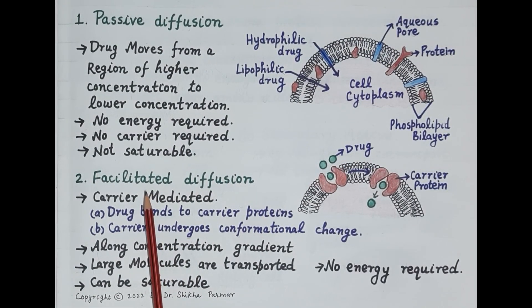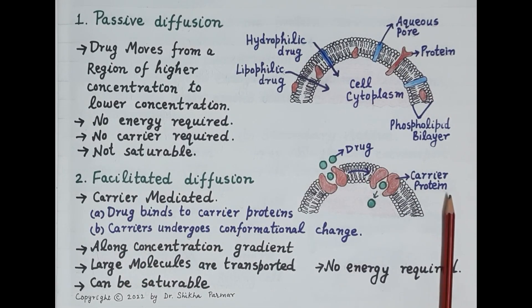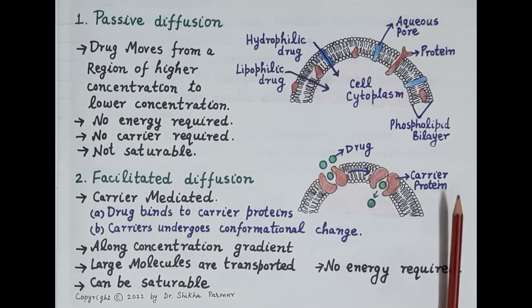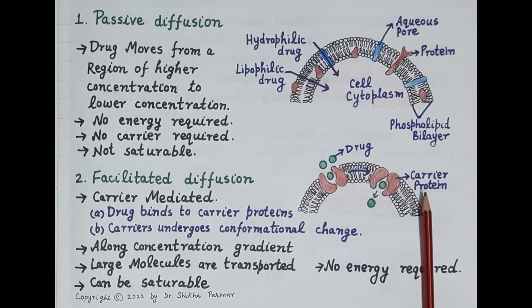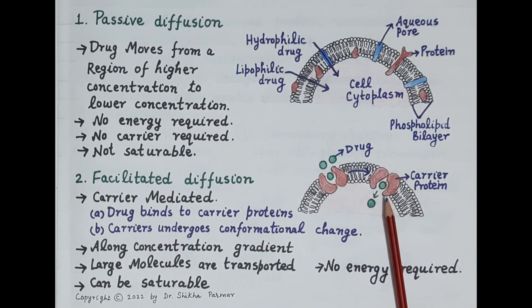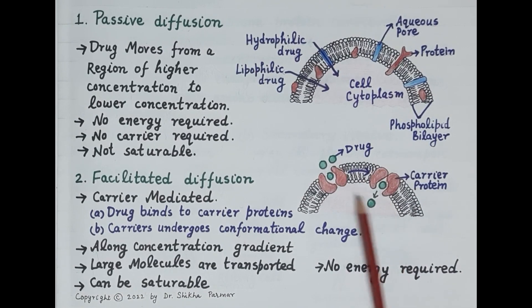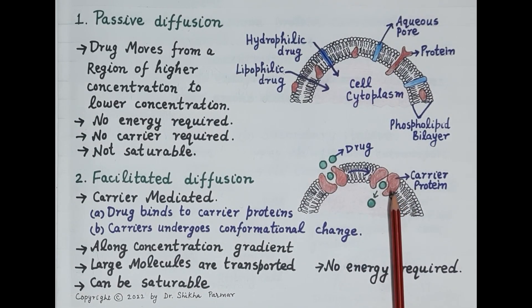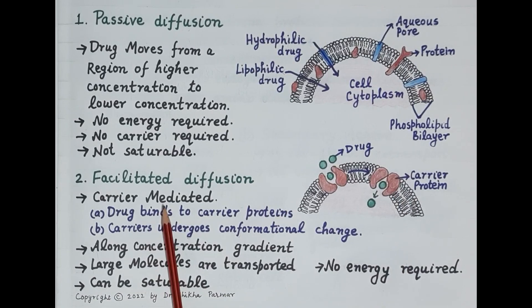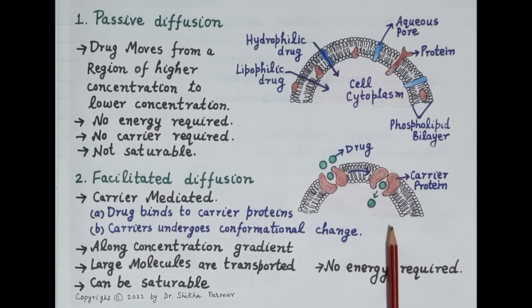Now let's understand facilitated diffusion. Here, transportation of drug across the cell membrane is facilitated by the use of proteins as carriers. Unlike passive diffusion, carriers are required for transportation, and these carriers are proteins present in the cell membrane. So facilitated diffusion is carrier-mediated diffusion.